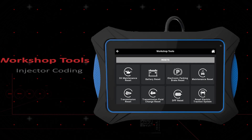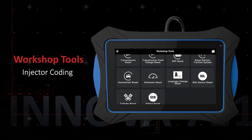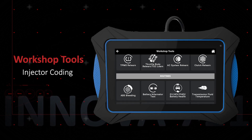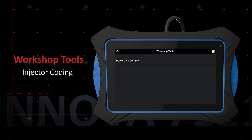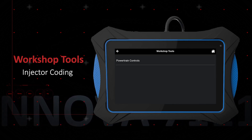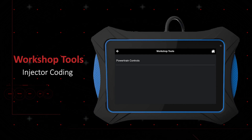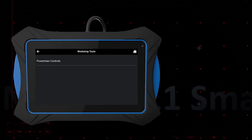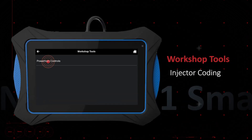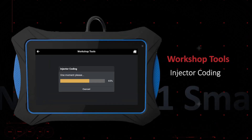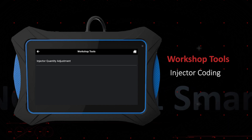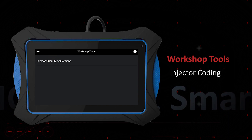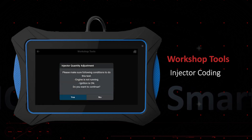The injector coding function is used to relearn or program the specific fuel injectors installed in the engine, which helps optimize fuel delivery and engine performance. It's important to run this routine whenever you clean or replace the fuel injectors, or when the vehicle is experiencing a fuel system issue.